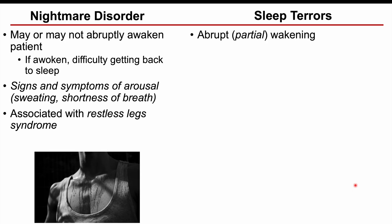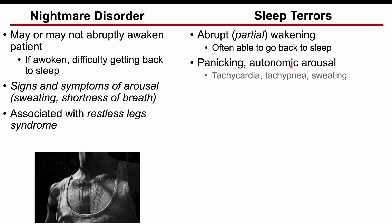In contrast, sleep terrors have an abrupt or partial awakening. Often the child experiencing sleep terrors will immediately sit up, appearing awakened but not fully awake — they don't know what is happening and are disoriented. They are often able to go back to sleep. They can have panicking and autonomic arousal, including tachycardia (increased heart rate), tachypnea (increased breathing rate), and sweating. This can resolve quite quickly — they may sit up suddenly but then calm down and return to sleep.